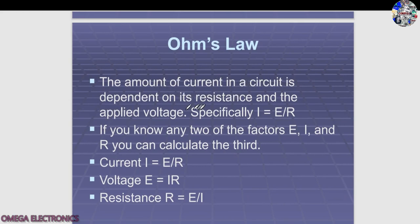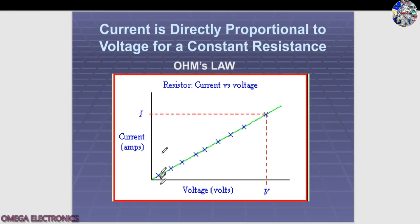Ohm's Law states that the amount of current in a circuit is dependent on the resistance and the applied voltage: I = E/R. If you know any two of the three factors — E, I, and R — you can calculate the third. The formulas are: current I = E/R, voltage E = IR, and resistance R = E/I.